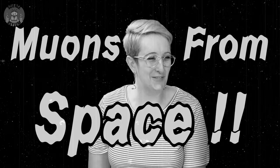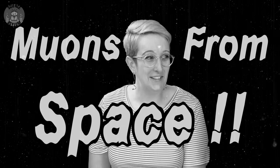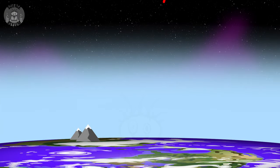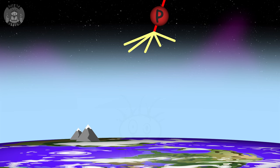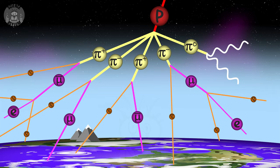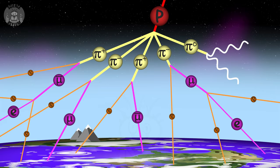These muons actually come from space — well, technically they don't actually come from space space. There are these things called cosmic rays, which come in and collide with molecules in the atmosphere, and that collision creates muons. So they're not from space, they're from the atmosphere.